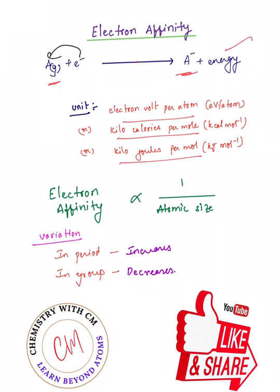Electron affinity is inversely proportional to atomic size. As the size decreases in a period from left to right, the electron affinity increases as the tendency to attract the electron increases. In a group, the tendency to attract the electron decreases.